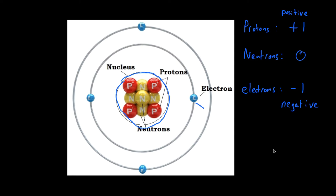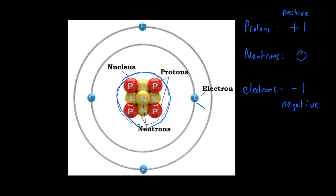Static electricity is where you produce a charge, but that charge isn't moving around in a current. 'Static' basically means stationary — the charge stays where it is. You've probably felt this when you've touched a surface and got a small shock through your finger. That's because something has become charged, and that is static electricity. It is produced when insulators are rubbed together.